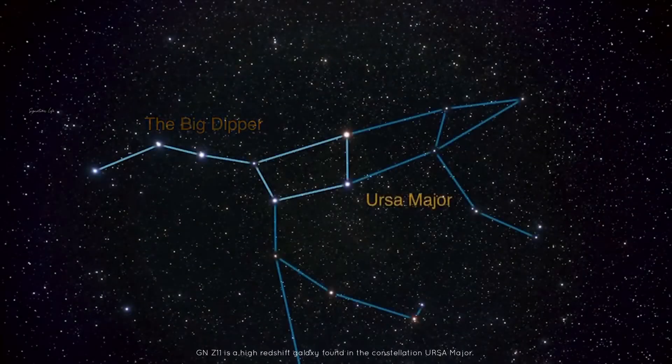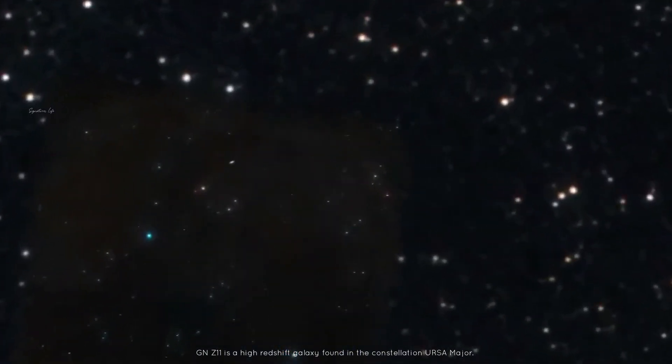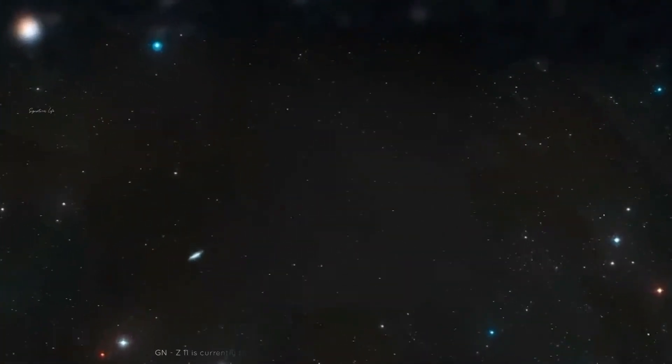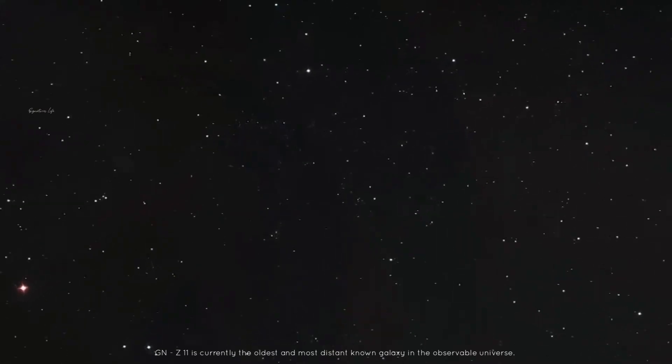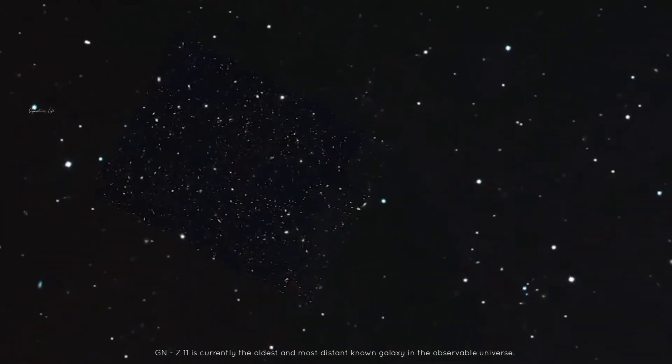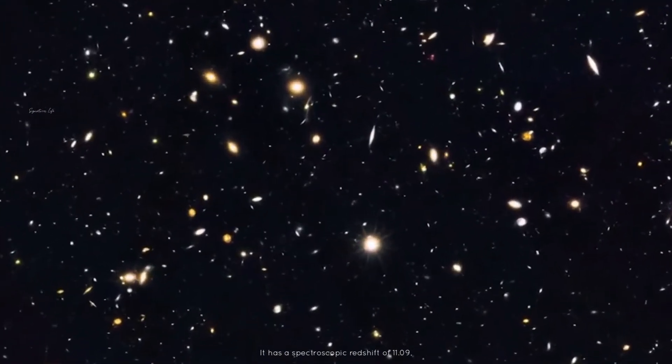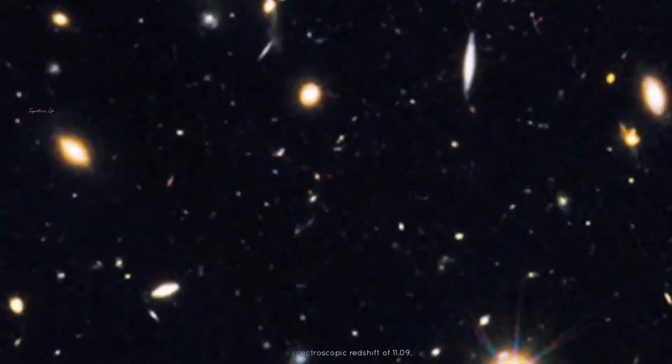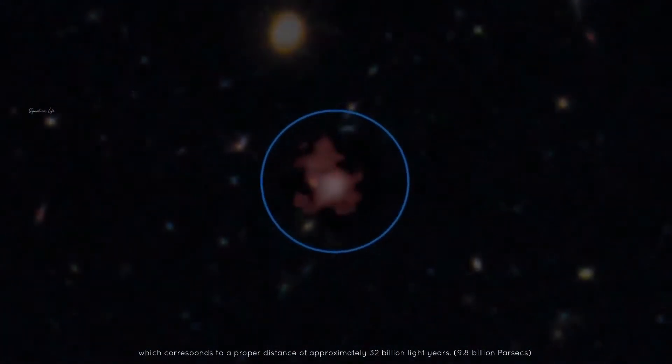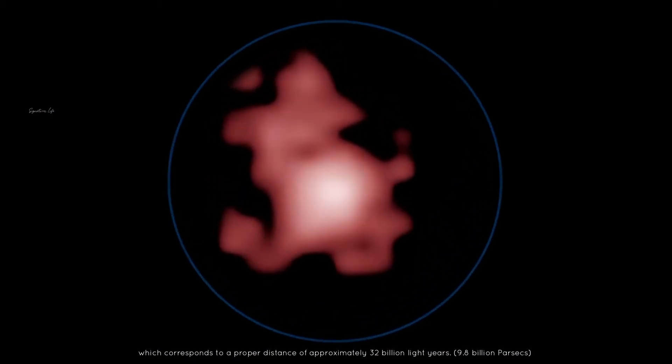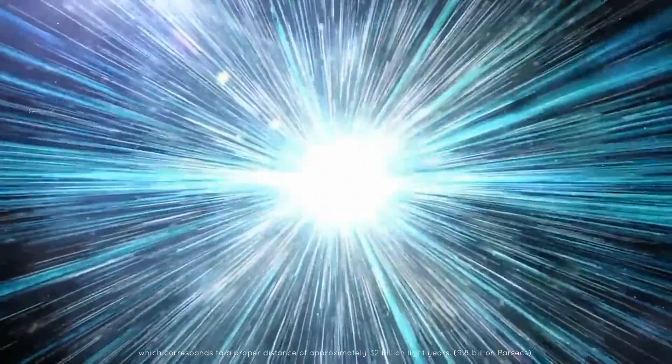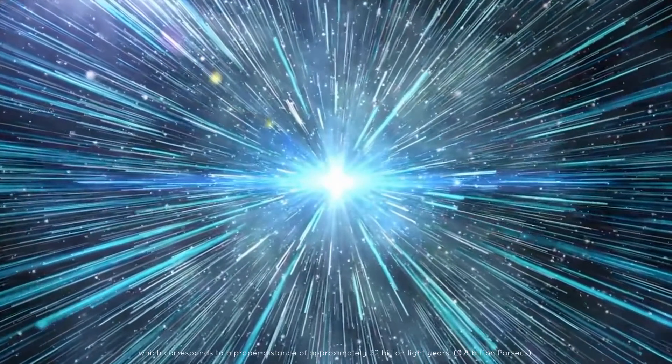GN-z11 is a high redshift galaxy found in the constellation Ursa Major. GN-z11 is currently the oldest and most distant known galaxy in the observable universe. It has a spectroscopic redshift of 11.09, which corresponds to a proper distance of approximately 32 billion light-years, or 9.8 billion parsecs.